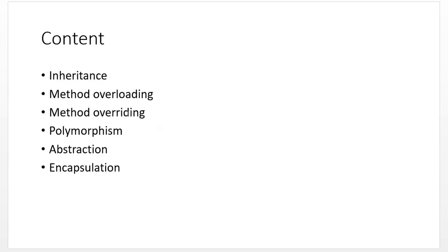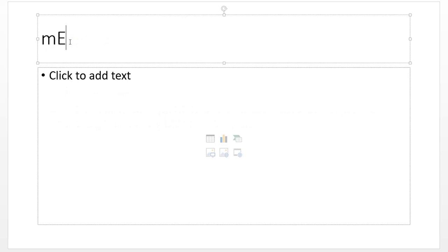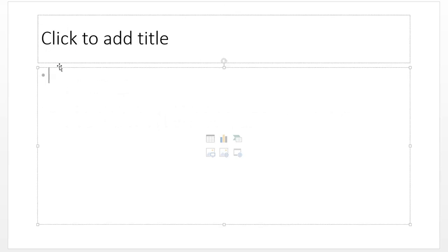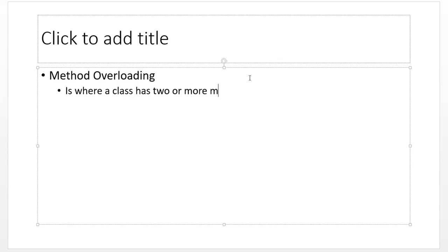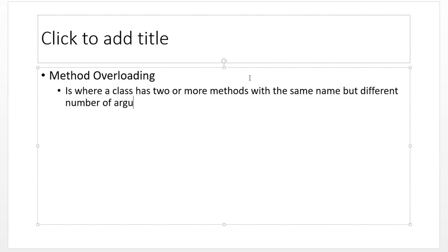Now let's look at method overloading and method overriding, and understand the difference between them. Method overloading is where a class has two or more methods with the same name but a different number of arguments.